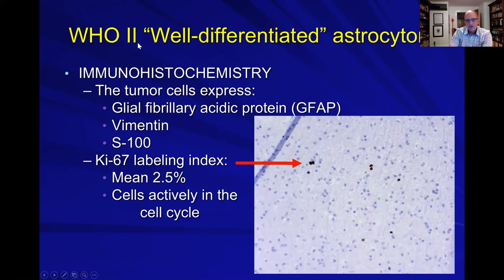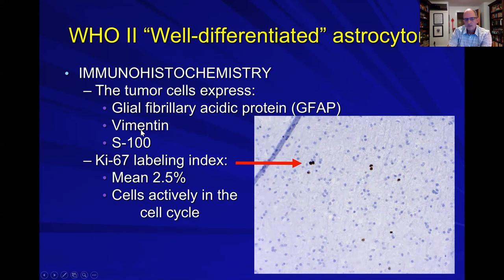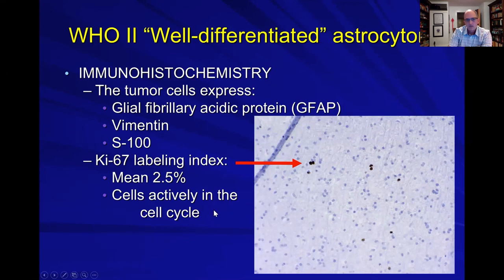These cells will also be positive for GFAP, vimentin, and S100 — strong markers for most glioma tumors, particularly well-differentiated ones. As tumors become more malignant and undifferentiated, these markers become less obvious and less prevalent. The Ki-67 index is higher in Grade 2 tumors, up to 2% to 3%.